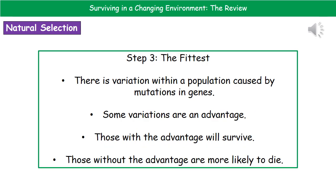The third step looks at who's likely to survive. Within any given population, we've got variation, and that's all down to mutations within the genes. Some of those mutations that lead to those variations are an advantage, meaning those organisms are more likely to survive. The ones without that advantage are more likely to die off because they're not able to compete as well.